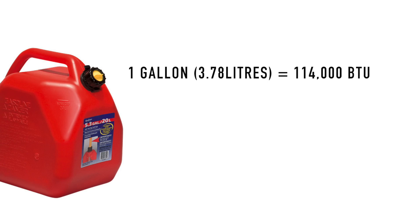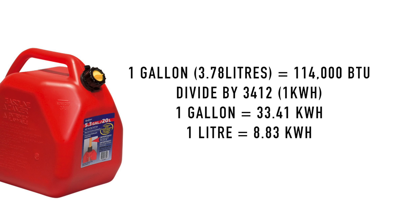A gallon of gasoline contains 114,000 BTUs — no wonder it's so popular. We also know that one kilowatt-hour of energy is equivalent to 3,412 BTUs. So the simple math is: 114,000 divided by 3,412 equals 33.41 kilowatt-hours per gallon of gasoline. In metric, one liter of gasoline is equivalent to 8.83 kilowatt-hours.